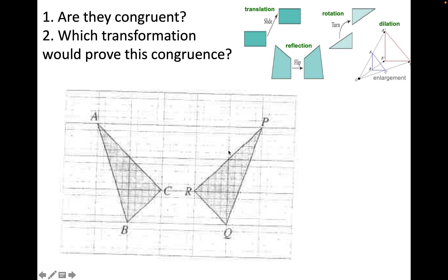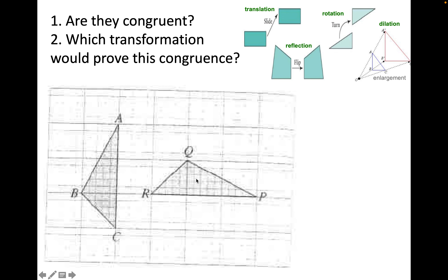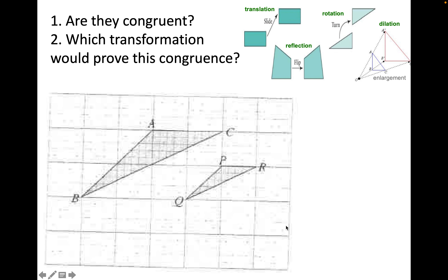In these diagrams, tell me: are these two triangles congruent, and which transformation would you use to prove congruence? In the first one, yes, they are congruent — if you did a reflection or flip, you would show congruence. The next pair is congruent too; you can use a rotation to overlap them. The third pair: these are not congruent because they are different sizes. You can dilate or enlarge one to overlap the other, but as soon as you change the size, they are no longer congruent — they are called similar. They have the same angles but not the same size.